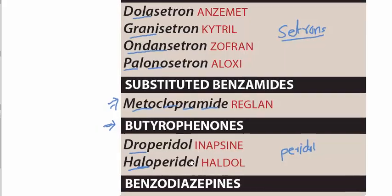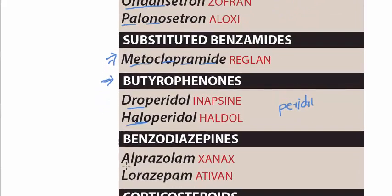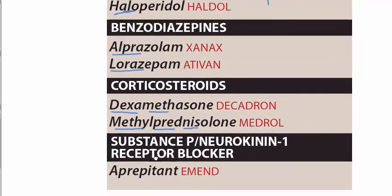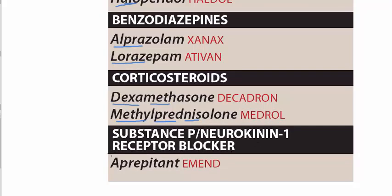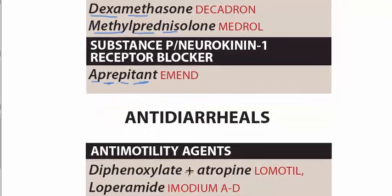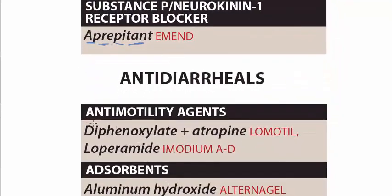We may also use benzodiazepines — in the benzodiazepines we have alprazolam and lorazepam. And corticosteroids — we have dexamethasone and methylprednisolone. Then the substance P / neurokinin 1 receptor blocker, which is aprepitant.